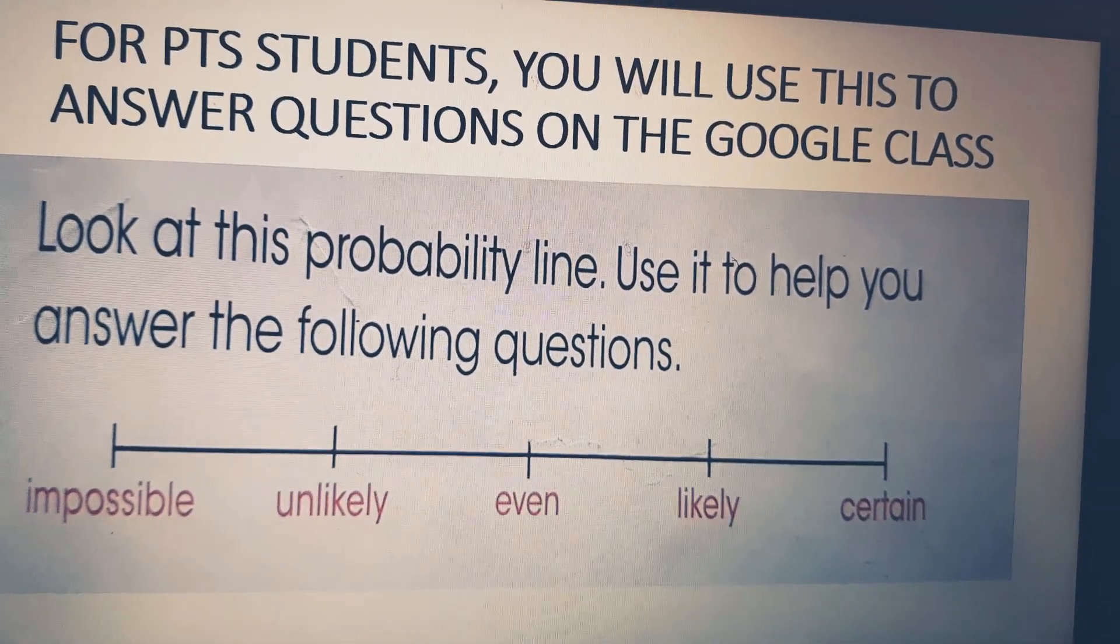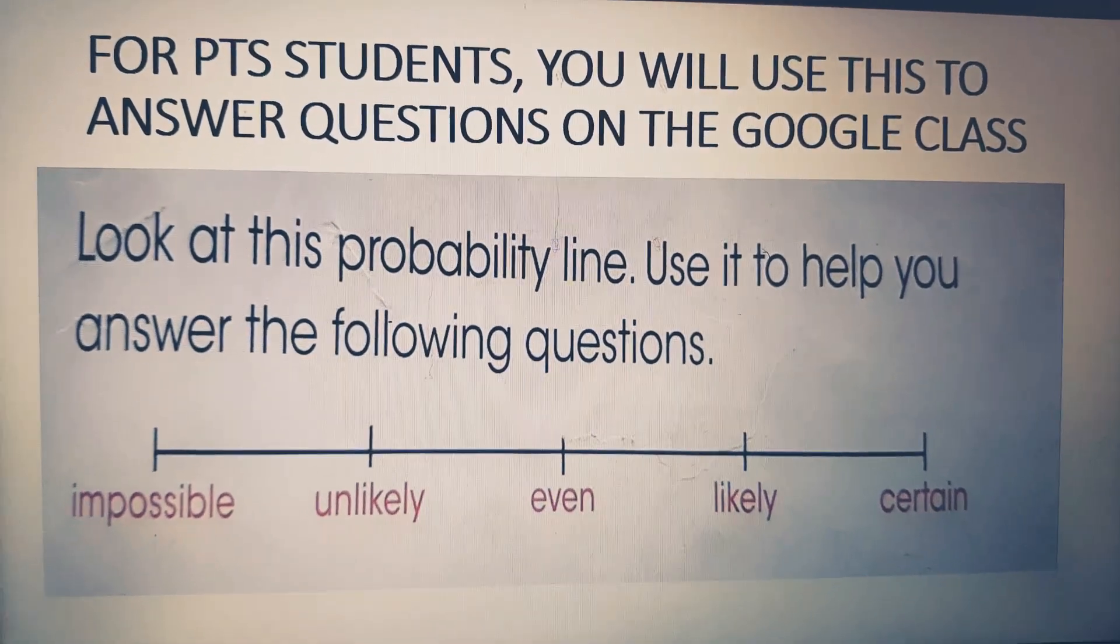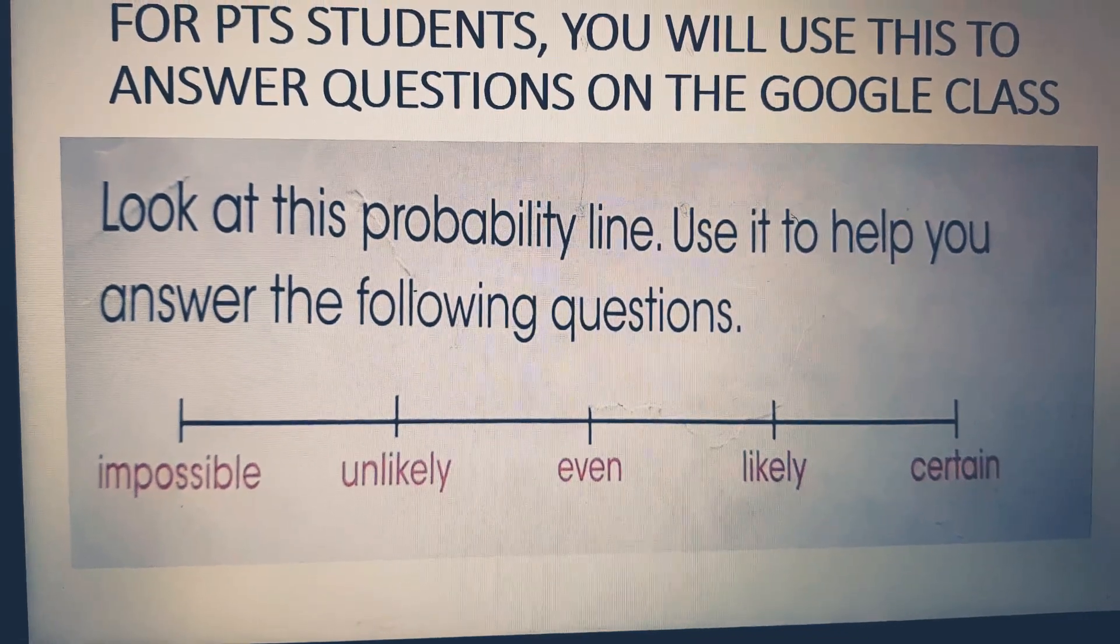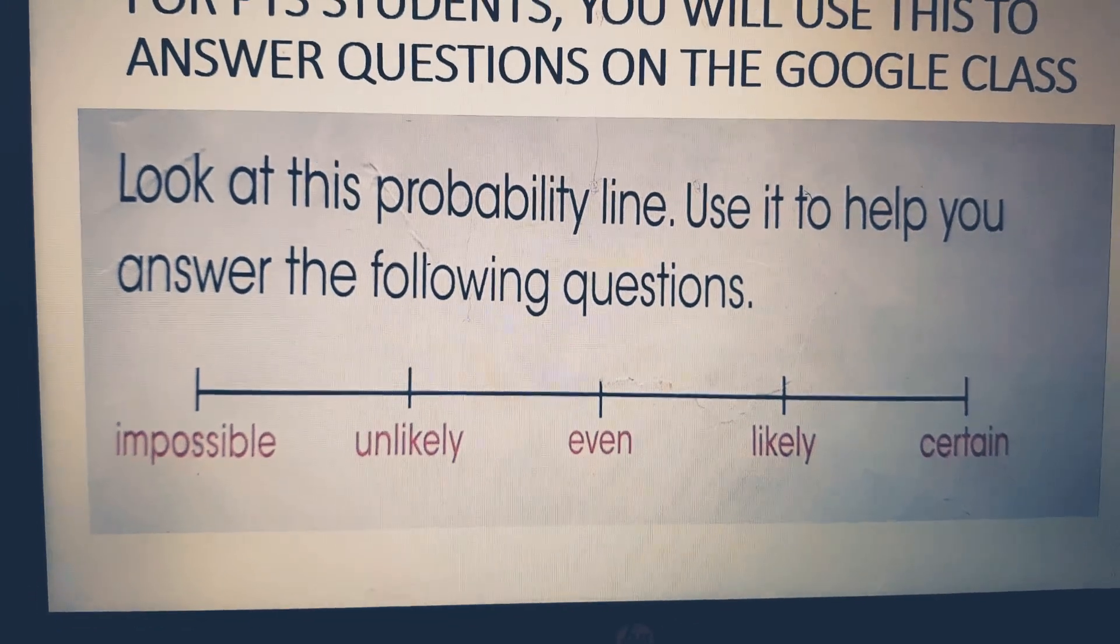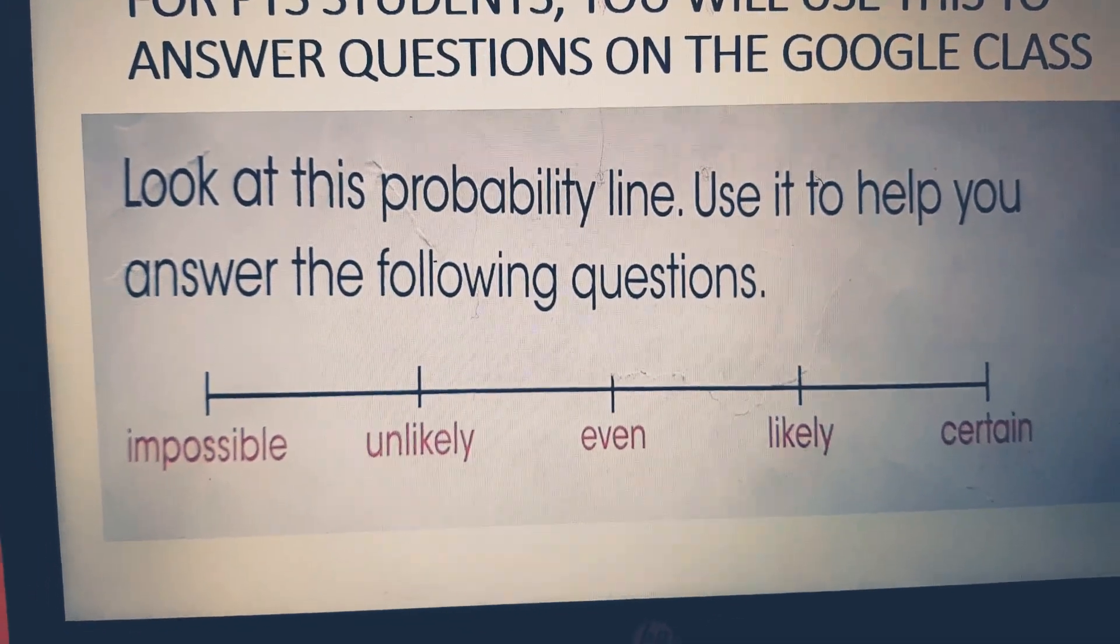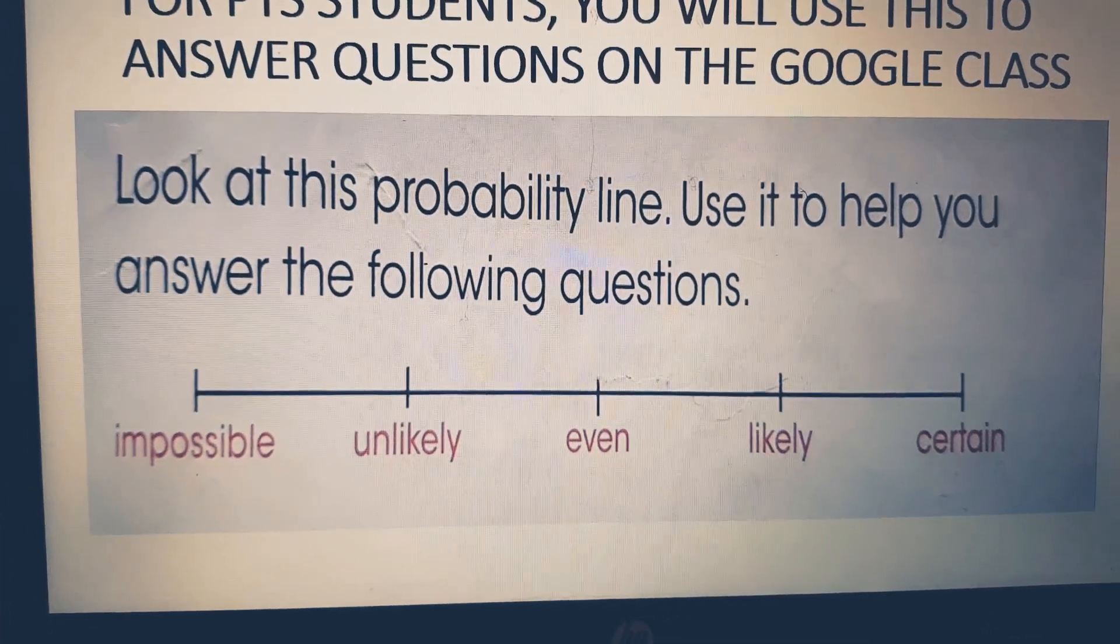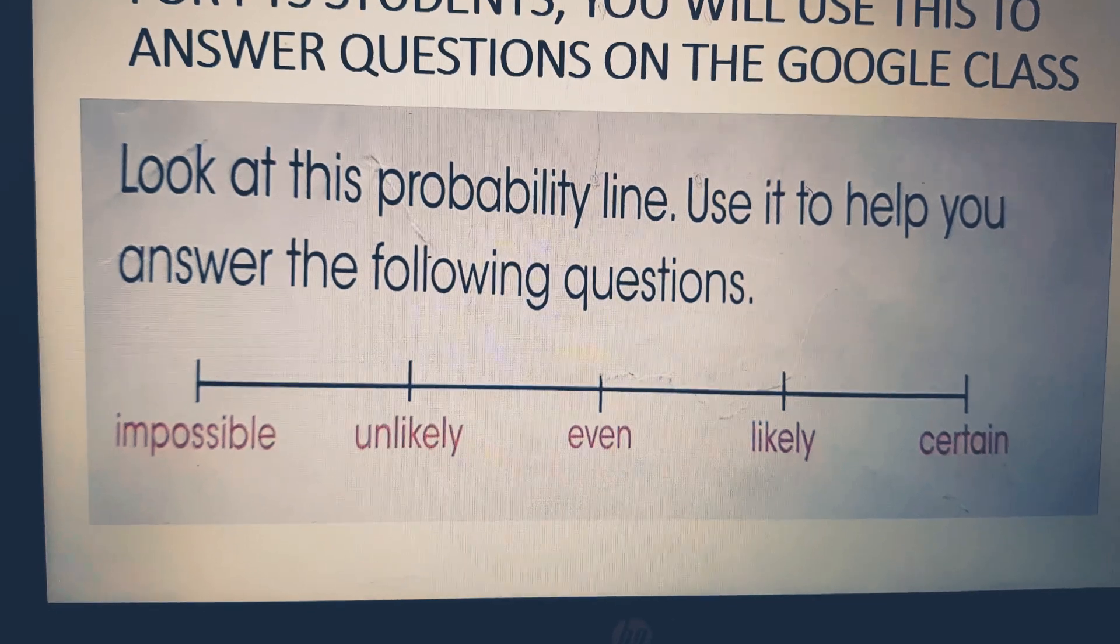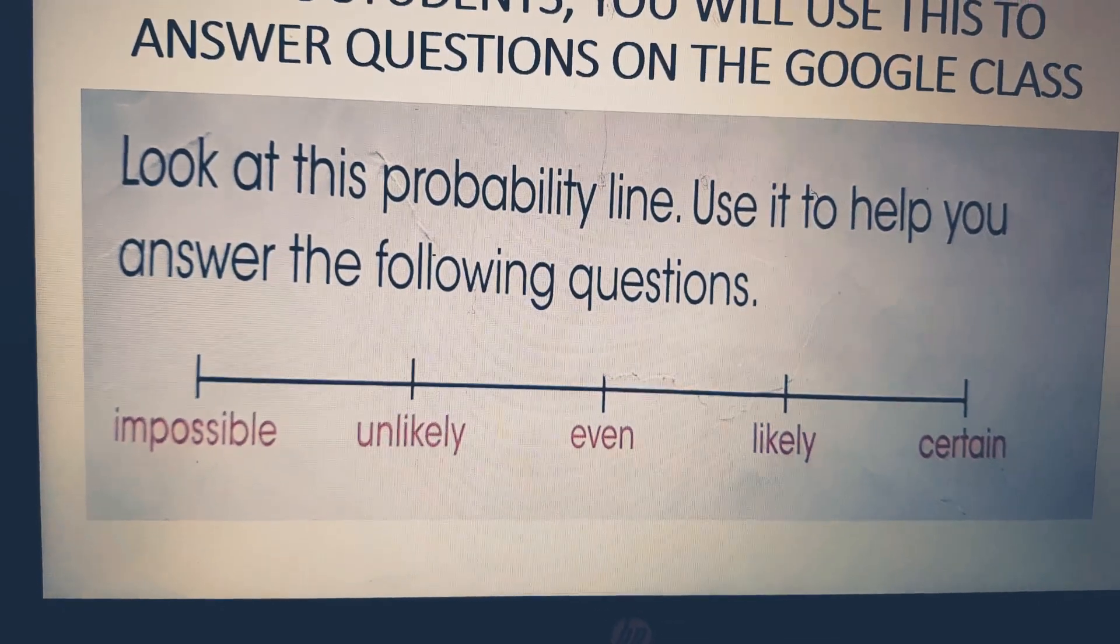For the students of Path to Success who are going to do the exercise in the Google Class, I would like you to look at this probability line where there are a few of the words that you are going to be using for answering the questions. So as you can see, if something is impossible, that means it doesn't have any chance that it will happen. If something is unlikely, that means it has very little chances that it is going to happen.